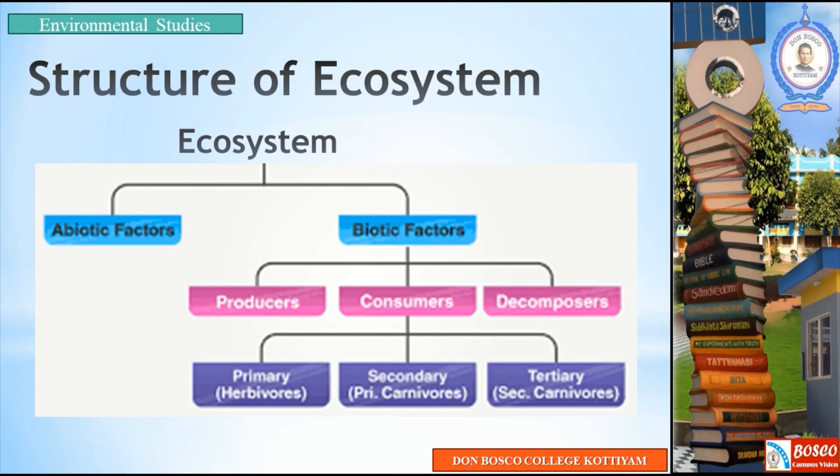Now that we have learned what an ecosystem is, let us look into the structure of the ecosystem. The ecosystem can be mainly divided into two: abiotic factors and biotic factors. The biotic factors can be further divided into three: producers, consumers, and decomposers. The consumers can be further divided into primary, secondary, and tertiary consumers.